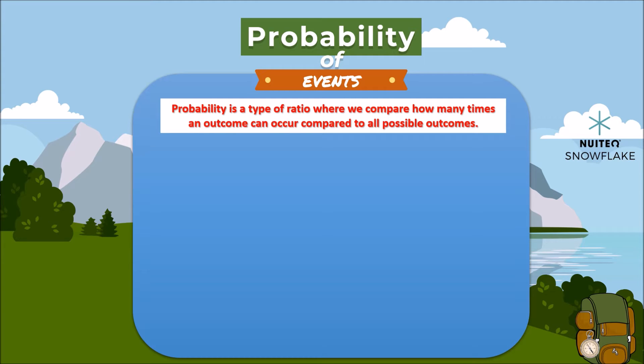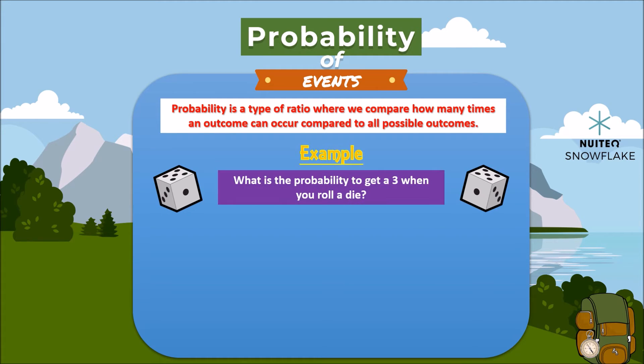For example, what is the probability to get a 3 when you roll a die? Well, as you know a die has 6 sides, 1 side contains the number 3, that gives us one wanted outcome in 6 possible outcomes. See?